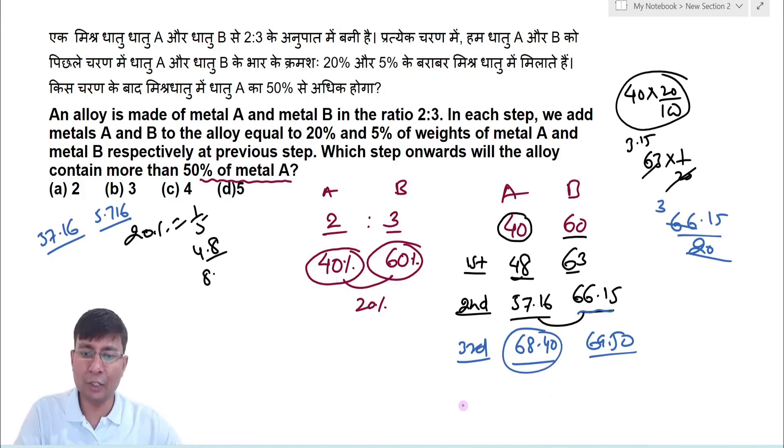लेकिन आपको 4th stage में find out करने की जरूरत नहीं है. अगर आप यहां पर 20% add करोगे तो यहां पर 12 add हो जाएगा तो यह आजाएगा बच्चो 80 के आसपास और इसमें 5 add करोगे तो 4 add होगा maximum तो यह 70 थी होगा. तो 4th step में जो quantity of A है वो quantity of B से क्या हो जाएगा ज्यादा हो जाएगा.